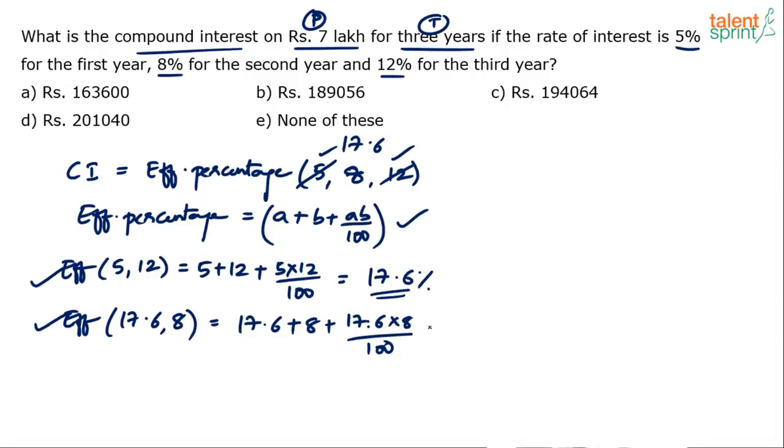140.8 by 100. You are getting the point. 17.6 into 8, 80 plus 56, 136 plus 4.8, 140.8. So this is 140.8. That divided by 100 will be 1.408. So overall it is going to be 17.6 plus 8 plus 1.408. Simplify. 17.6 plus 8 is 25.6. 25.6 and 1.4, 25.6 and 1.4 is 27, 27.008 percentage actually. That is the exact calculation. You are able to follow. So this is the compound interest. This is the total compound interest, 27.008 percentage.